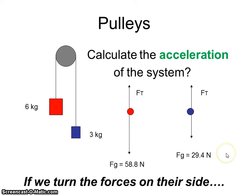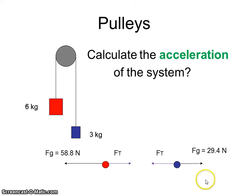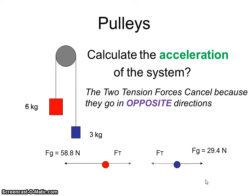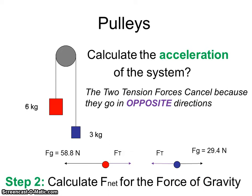If we turn them on their side, it's easier to see which forces cancel out. Just like before, the two tension forces cancel. Now, how do we calculate the net force? Since these two guys cancel each other out, all you're left with is the 29.4 going one way, the 58.8 going the other.